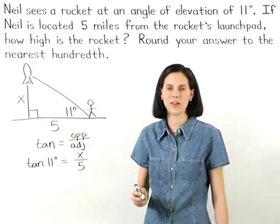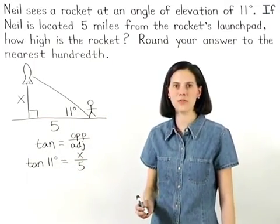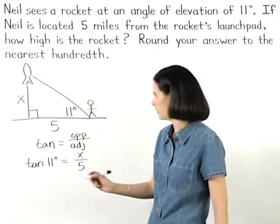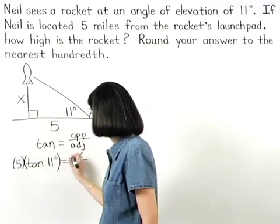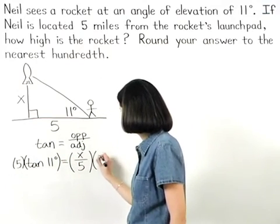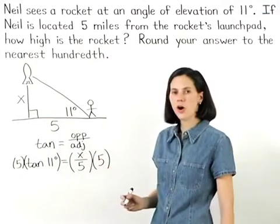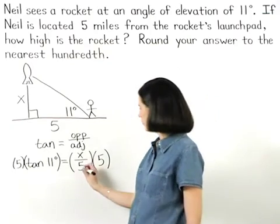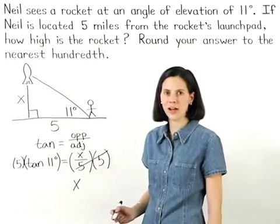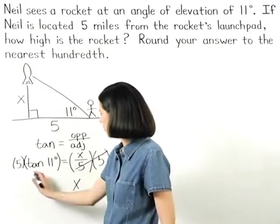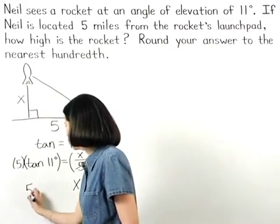Solving for x, we multiply both sides of the equation by 5. On the right side, the 5's cancel, and we're left with x. And on the left side, we have 5 times the tangent of 11 degrees.